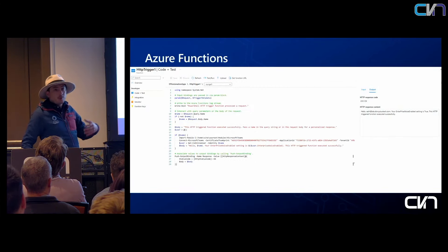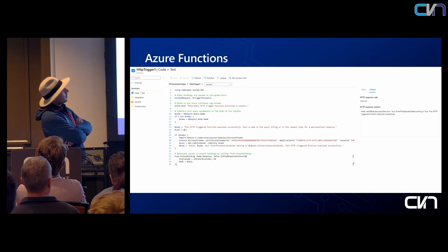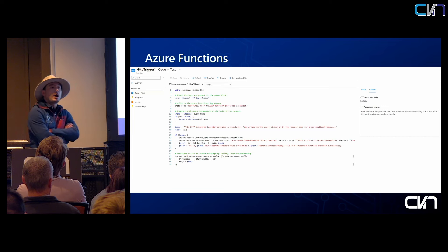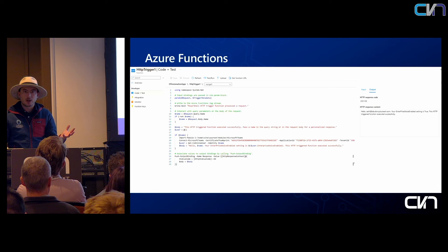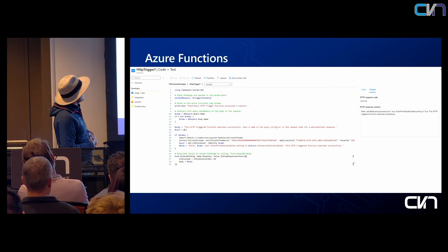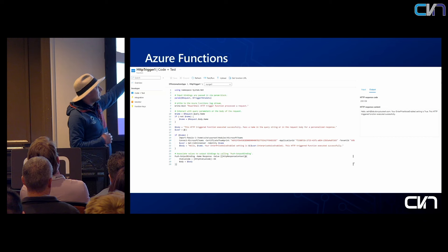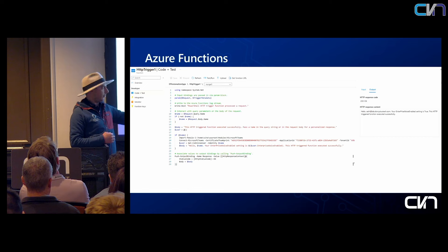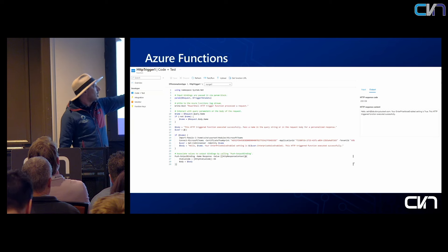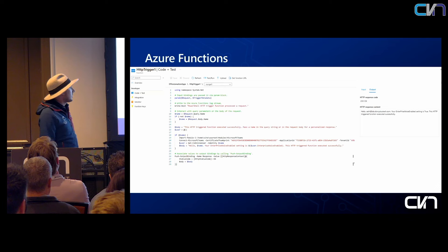Here's what it looks like once you've created the function app and created a function within it. I created this as an HTTP-triggered function, meaning it has to be triggered using an API or HTTP request from whatever your client solution is. Looking through the code: check the request, make sure it has a name in the parameter, and if there is a name, use the Microsoft Teams module, connect to Microsoft Teams using the command line with my certificate thumbprint, the application ID, and my tenant ID, assuming it's been allowed in the tenant. Then just get the CS online user and write something to the response: is enterprise voice enabled, yes or no? And the function was triggered successfully.